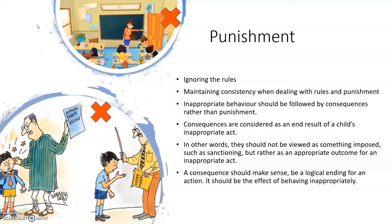Punishment. It is essential that the teacher shows students what will happen if they ignore the rules. A teacher needs to maintain consistency when dealing with rules and punishment. Inappropriate behavior should be followed by consequences rather than punishment. These logical consequences need to be applied purely and consistently and should be focused on helping students learn from their own mistakes. Consequences are considered the end result of a child's inappropriate act — they should not be viewed as something imposed such as sanctioning, but rather as an appropriate outcome for an inappropriate act. A consequence should make sense, should be a logical ending for an action, and should be the effect of behaving inappropriately.